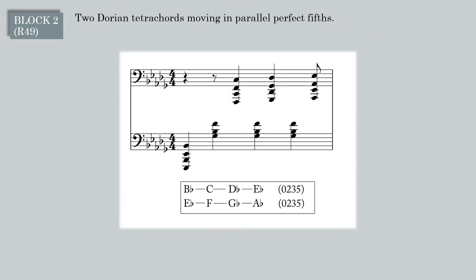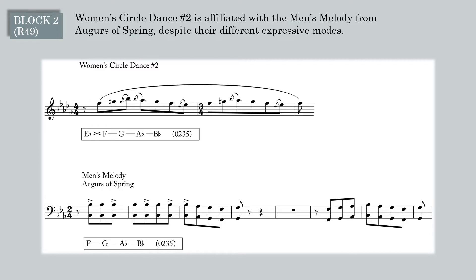The lower parts animate the harmony with two Dorian tetrachords moving in parallel fifths: B-flat–C, D-flat–E-flat, and E-flat–F, G-flat–A-flat. This mostly harmonic block contains a brief melodic fragment that traces the Dorian tetrachord F, G, A-flat, B-flat. The G-natural of this tetrachord conflicts with the G-flat of the harmonic unit. This is a tune for the women dancers — solo winds, high register — and extends the pastoral mode of the opening block. I'll call it women's circle dance number two.